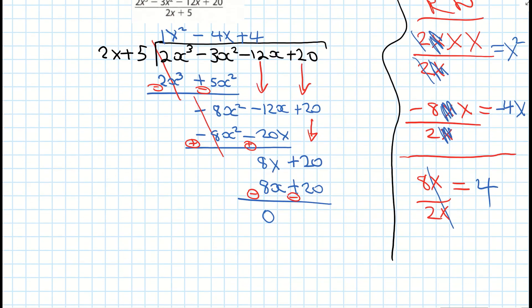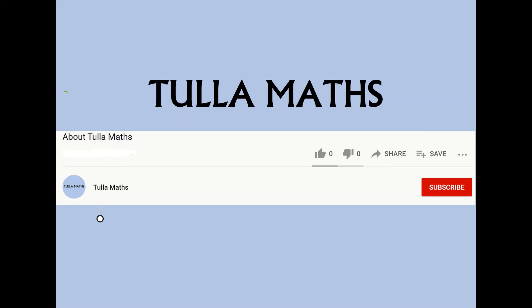And our final answer. Our answer is. So our factor when we divided it in is 1x squared or just x squared minus 4x plus 4. So that's our video on long division. Thank you for watching another tutorial video from Tullamaths. Make sure and subscribe.